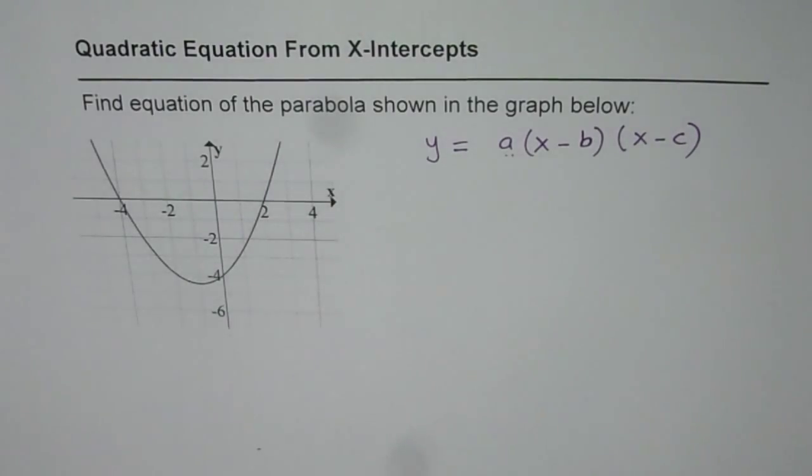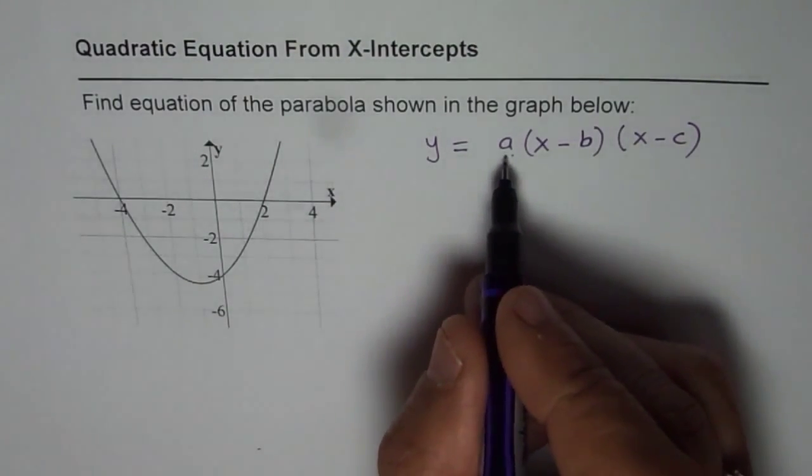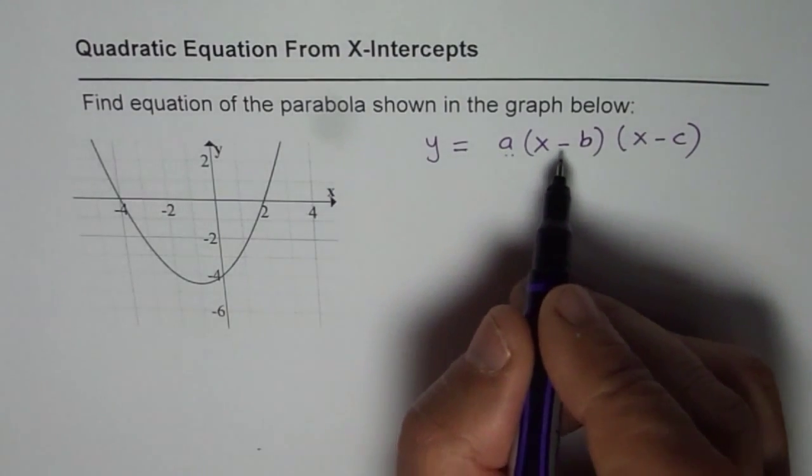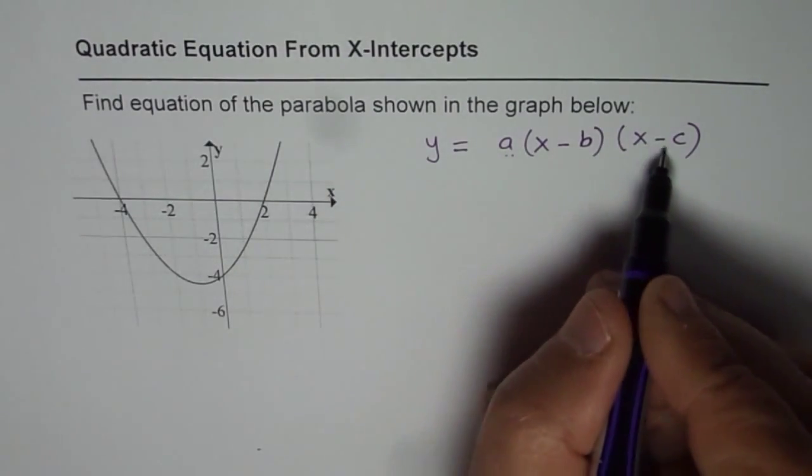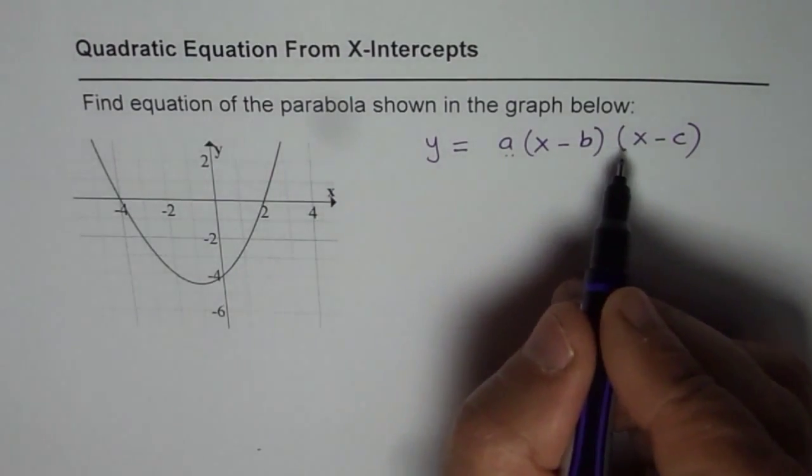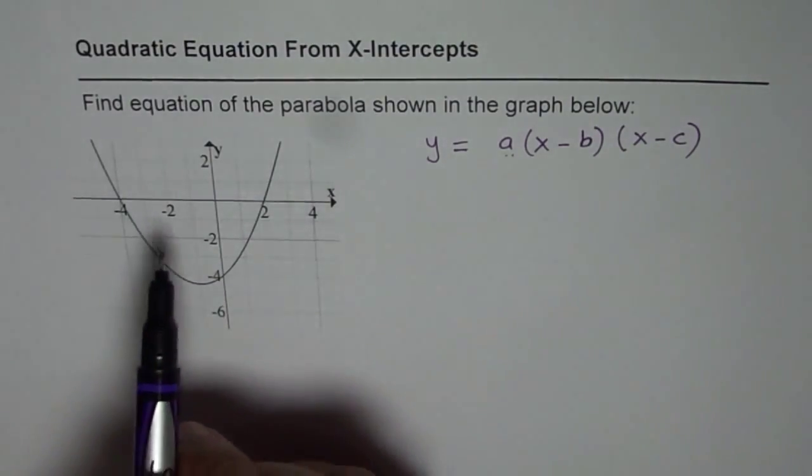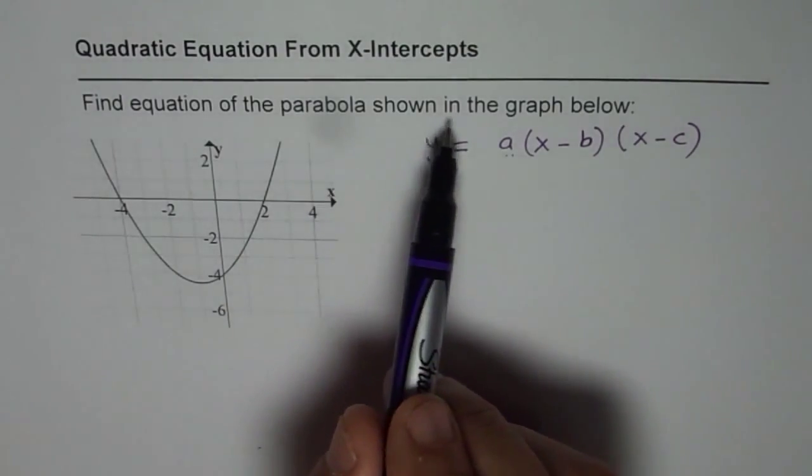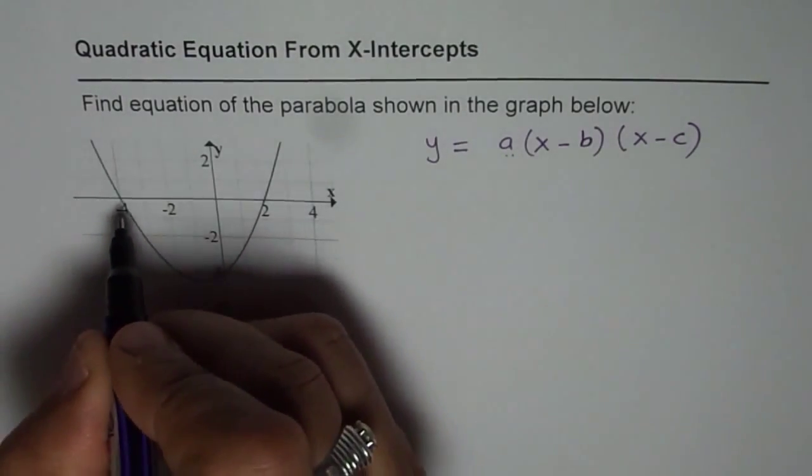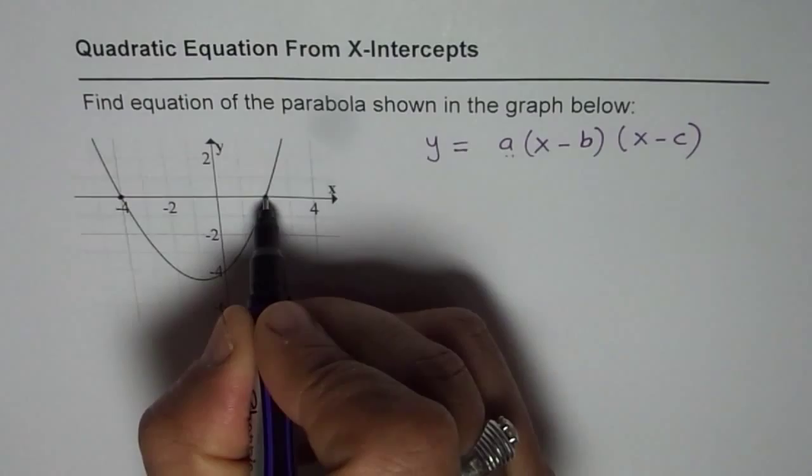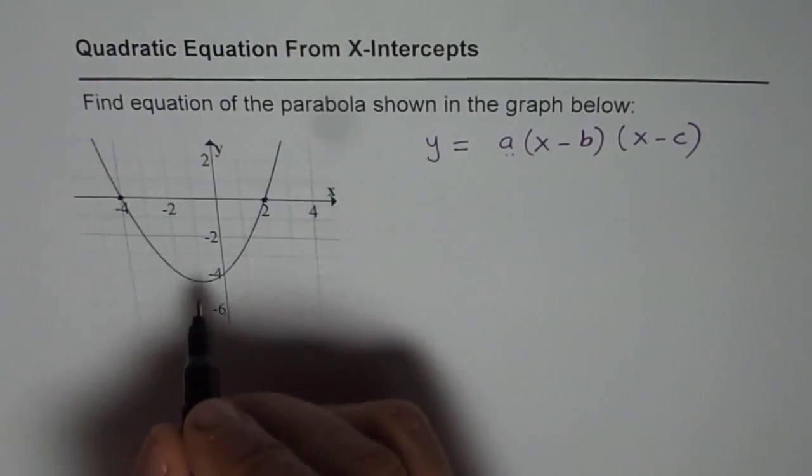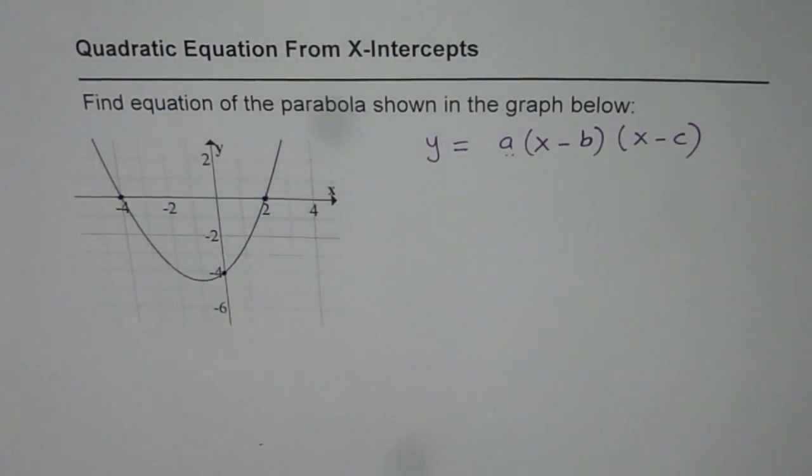Now in this case since we are given one graph we have to find a. To find a, apart from knowing the x-intercepts we also need to know some other point. Two good points to consider are the x-intercepts. The third one which we will consider is the y-intercept in this particular case.